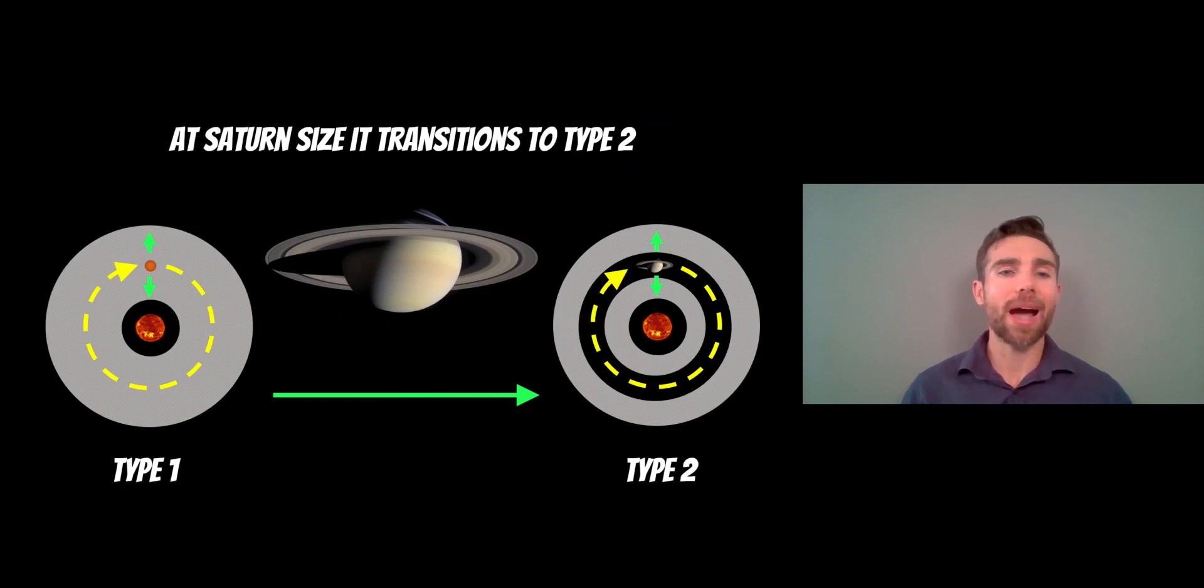When they're about the size of Saturn they will transition from type 1 to type 2. These are now massive enough that they can cause a significant change in the structure of the disk. They actually clear out a gap and it typically occurs around about the size of Saturn. That depends on the disk that it's in and a few other parameters but it's generally around about that sort of size.